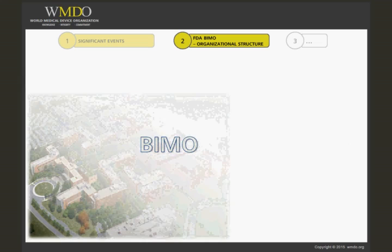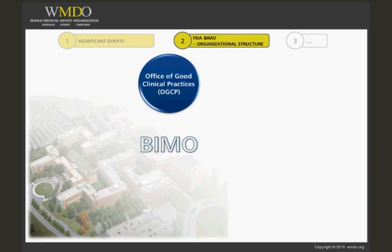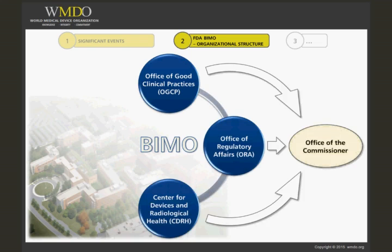Three of the four principal parts of the U.S. FDA that are held responsible for the bioresearch monitoring program and are located on the centralized U.S. FDA campus are the Office of Good Clinical Practices, the Office of Regulatory Affairs, and the Center for Devices and Radiological Health, which is the center specific to the regulation of medical devices.